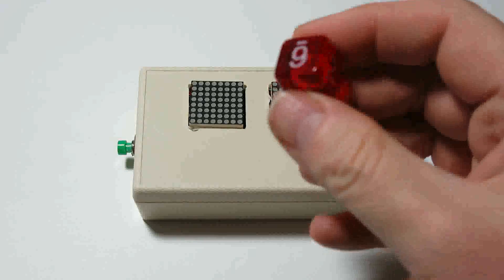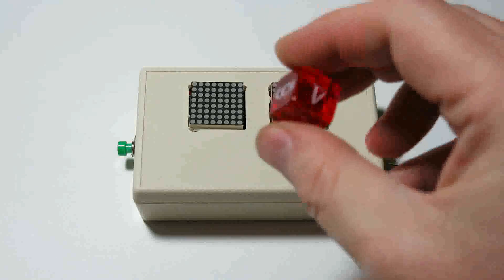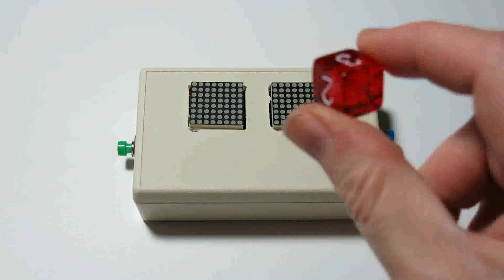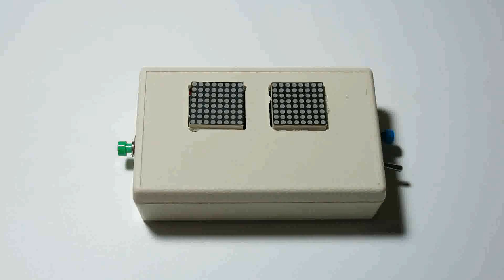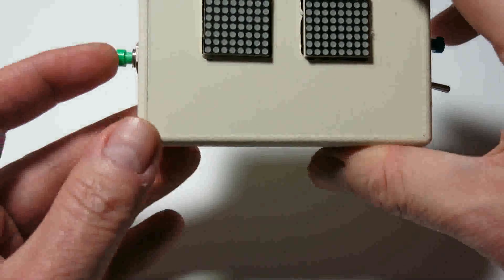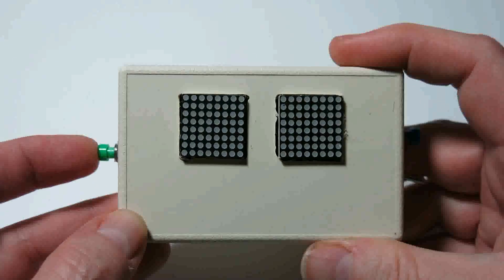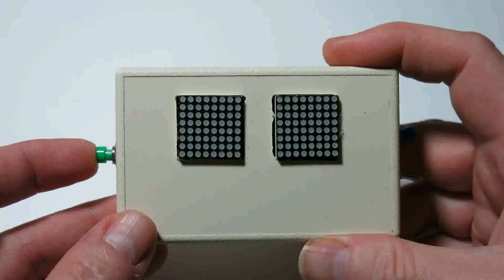When first turned on, this device is in a mode to emulate a standard six-sided die. Use this button, the roll button, to actually roll the die.